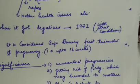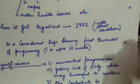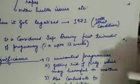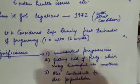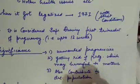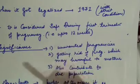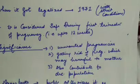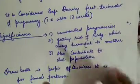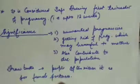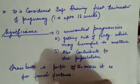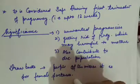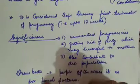What is the significance of MTP? The significance is: first, to get rid of unwanted pregnancies or pregnancies that may be harmful to the mother's health. It also contributes to a decrease in population — when unwanted pregnancies are removed, population is ultimately controlled. A drawback, however, is that people often misuse MTP for female fetus selection, which is a serious concern.